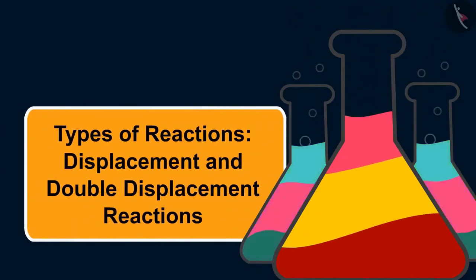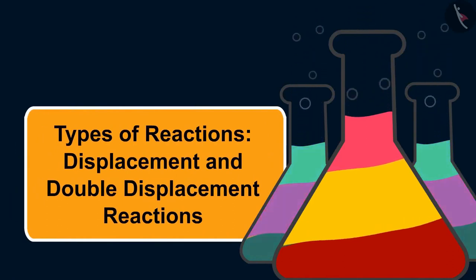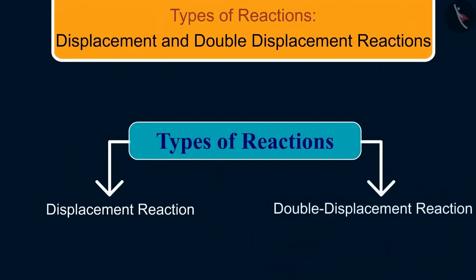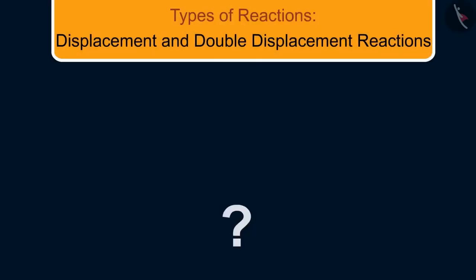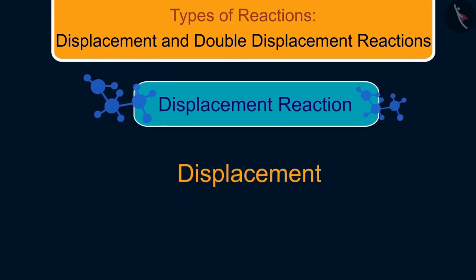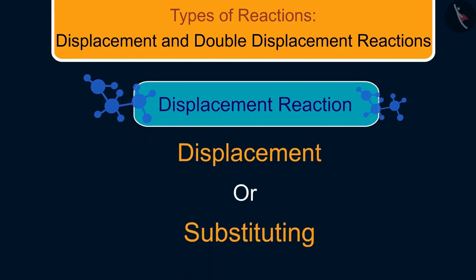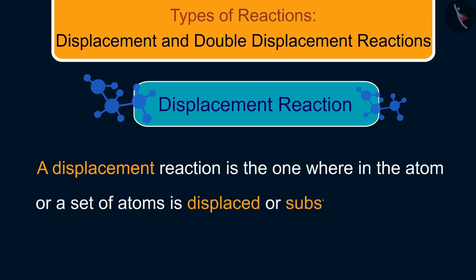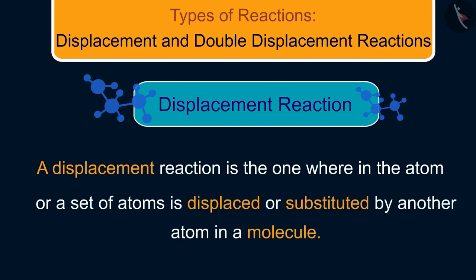Hello friends, welcome to this video session. The topic that we are going to cover in this session is displacement and double displacement reactions. As you know there are a number of types of reactions. Let us now begin with our first topic: displacement reaction. The word displace tells us that it means we are displacing or substituting something. A displacement reaction is the one wherein an atom or a set of atoms is displaced or substituted by another atom in a molecule. For example, suppose A is more reactive than B, then A can displace B from BC and form AC.